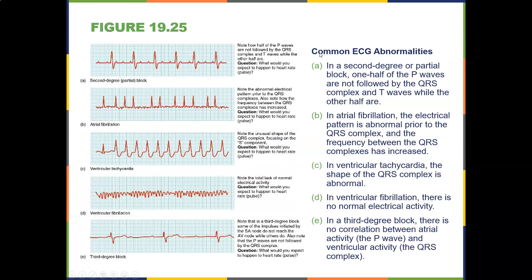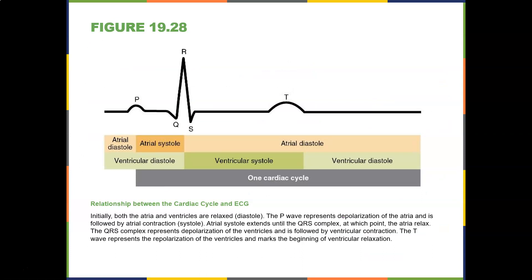Here are some common ECG abnormalities. A second-degree partial block may show a characteristic pattern. Atrial fibrillation shows an abnormal electrical pattern prior to the QRS complex, and note how the frequency between QRS complexes increases. Ventricular tachycardia shows an unusual shape of the QRS complex. Ventricular fibrillation shows a total lack of normal electrical activity — this is a serious emergency. In a third-degree block, some impulses initiated by the SA node do not reach the AV node, and P waves are not followed by QRS complexes. Atrial fibrillation and ventricular tachycardia are definitely problems, but you must know normal in order to recognize abnormal.